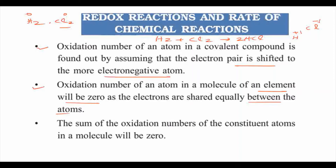The sum of the oxidation numbers of the constituent atoms in a molecule will be zero. For example, in the molecule of hydrogen chloride, we add the oxidation numbers and the answer is zero. So the sum of oxidation numbers of the constituent atoms in any molecule will be zero.